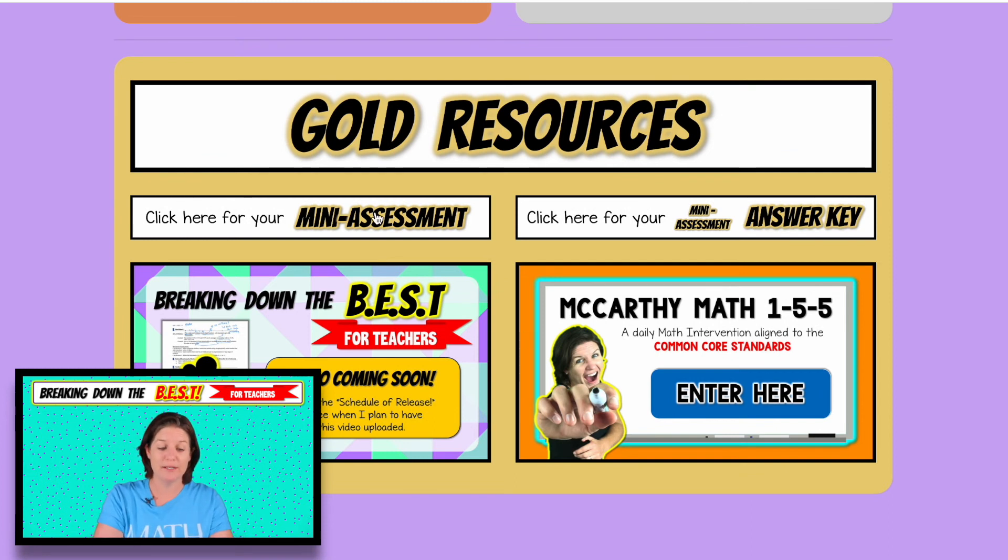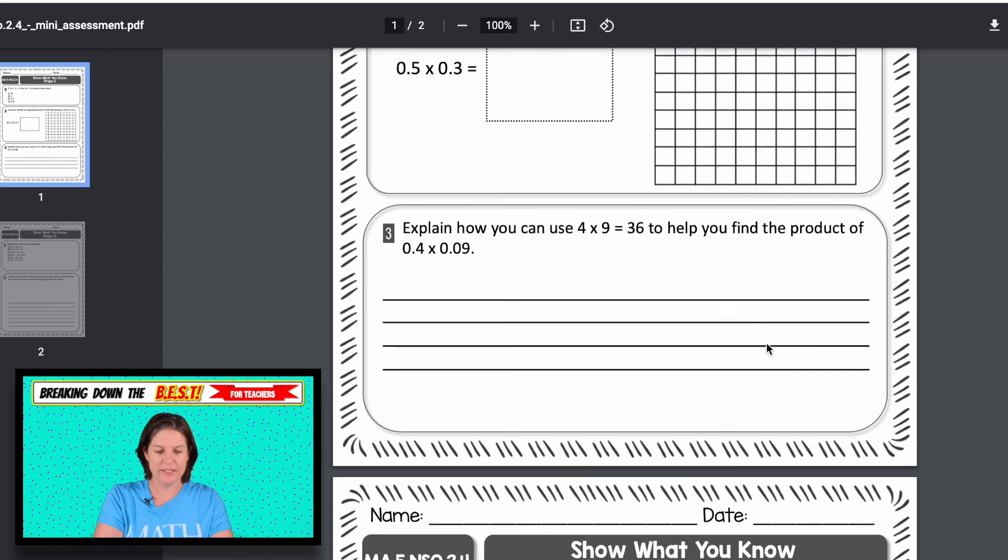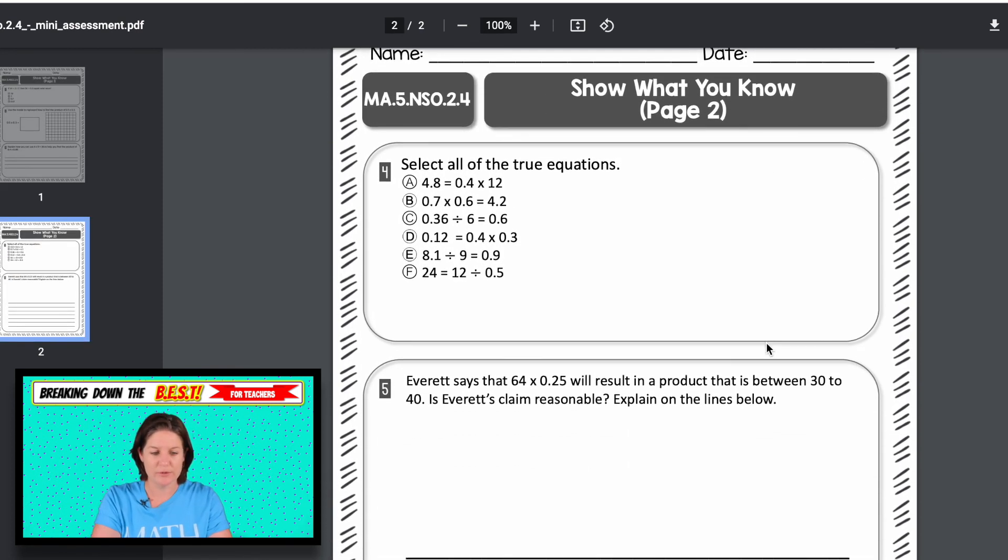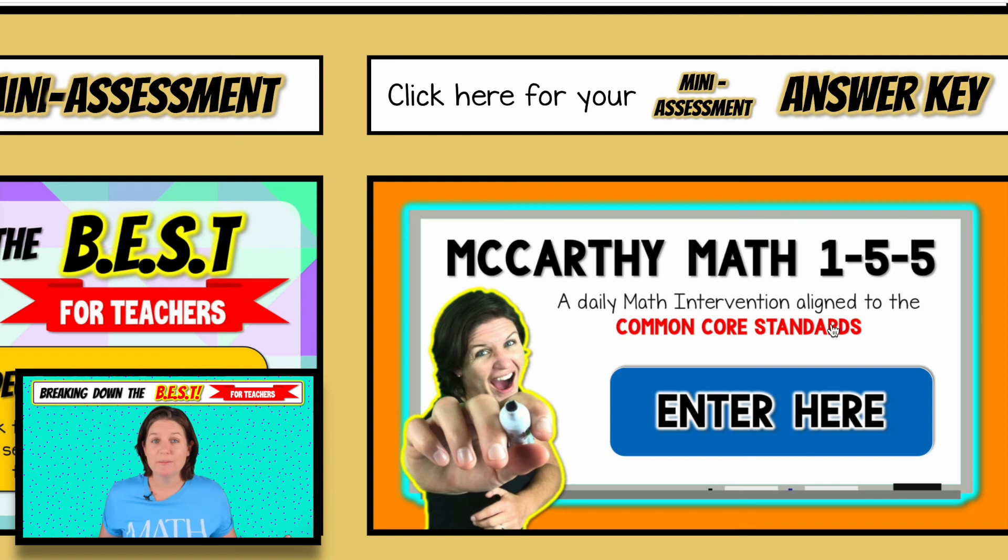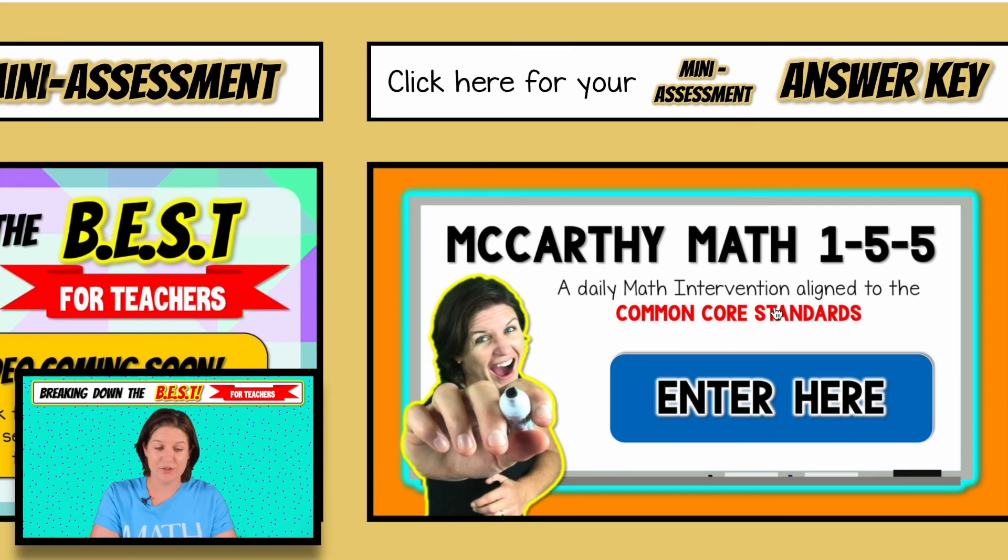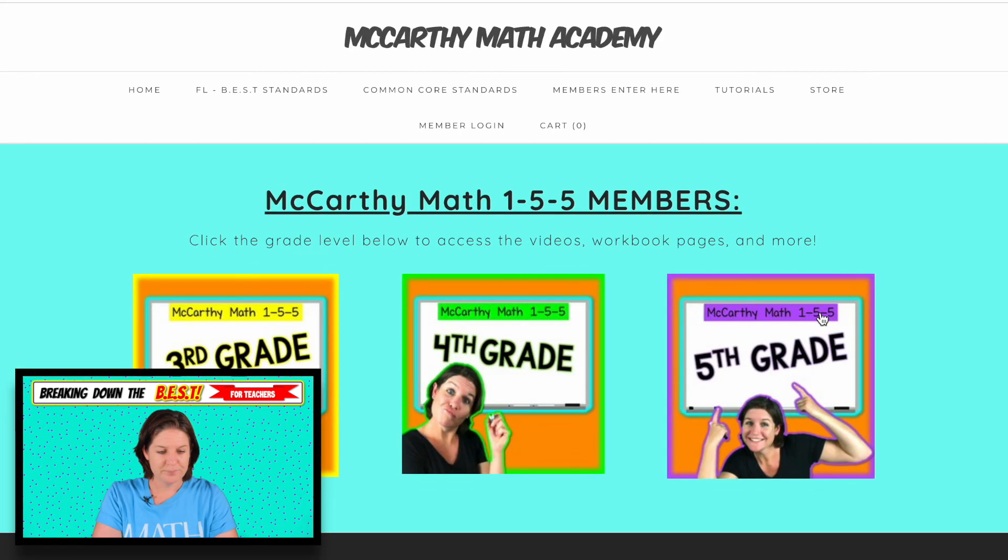The main reason for having the gold would be the mini assessment and McCarthy Math 155. Here's the mini assessment. You might be thinking, well, my county provides us with assessments that we need to use. And that's great. Here's just some extra practice. And it doesn't even say assessment on it. It just says show what you know, right? So you can use that however you see fit. Answer key is right there.